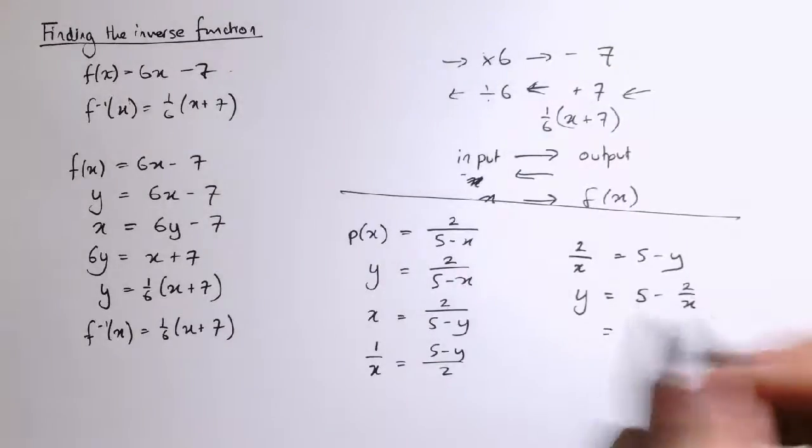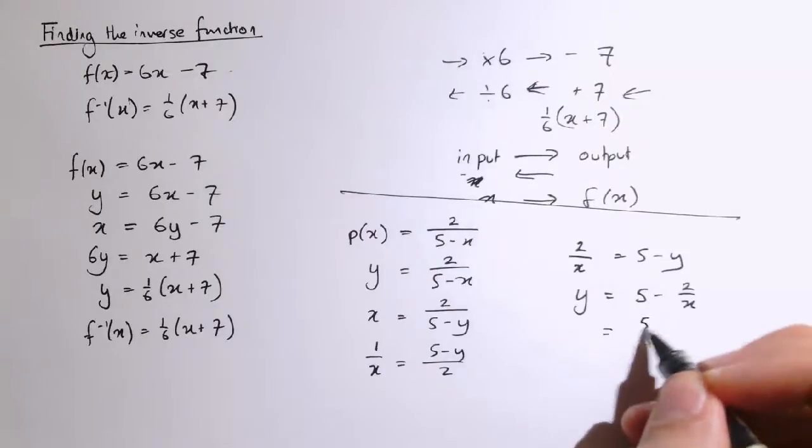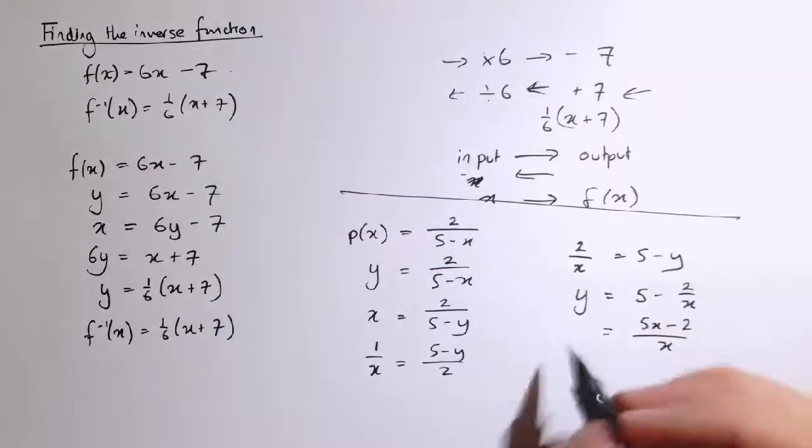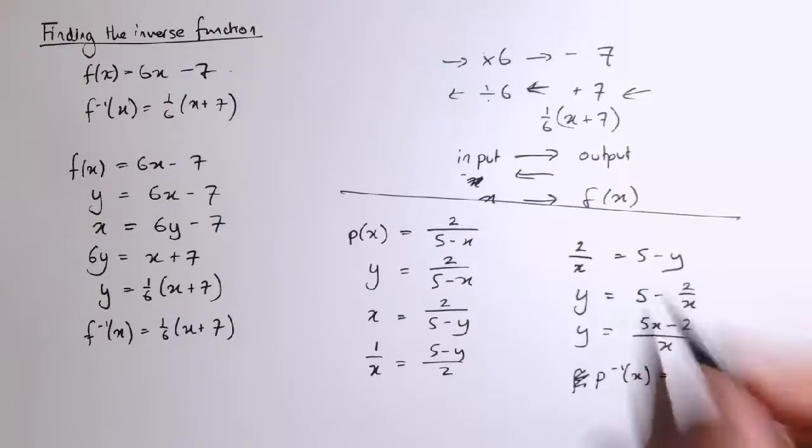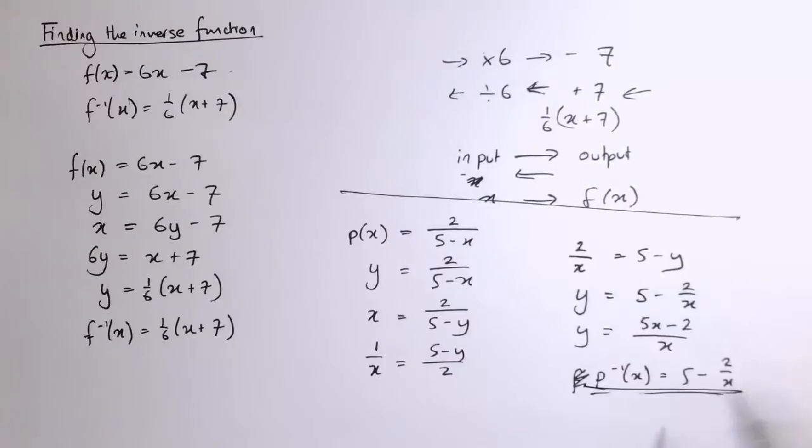You might also combine that as a single fraction if you wanted to. Write that as 5x minus 2 over x. But either way, it doesn't really matter. We've got either of those two are equivalent. That's p inverse of x, 5 minus 2 over x.